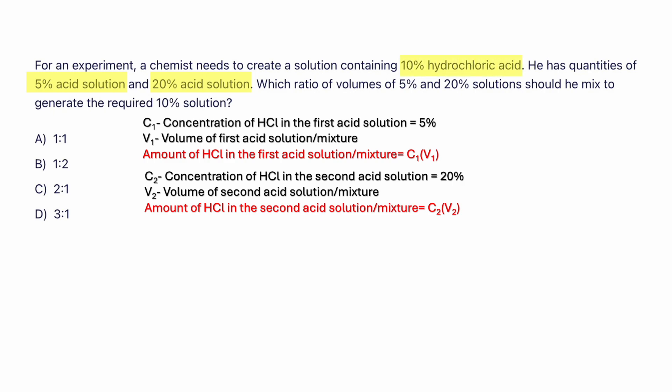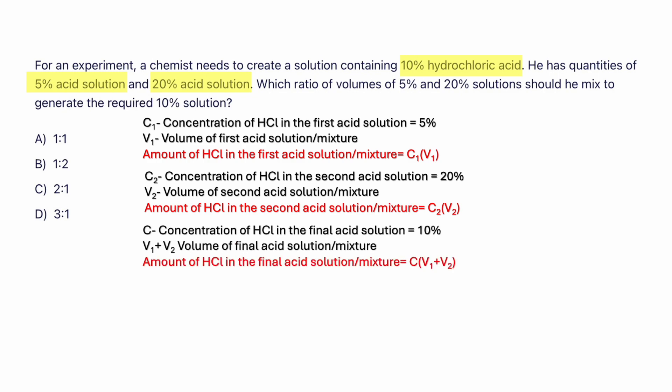What is it that we need to find? They're creating a 10% hydrochloric acid solution, so that is the concentration of hydrochloric acid in the final acid solution — let's call that C. The final acid solution will have a volume V1 plus V2. For example, if you're mixing one ounce of water with two ounces of milk, your mixture is going to have one plus two, that is three ounces of water and milk. So the same concept here. The amount of HCl in the final acid solution would be C times (V1 plus V2).